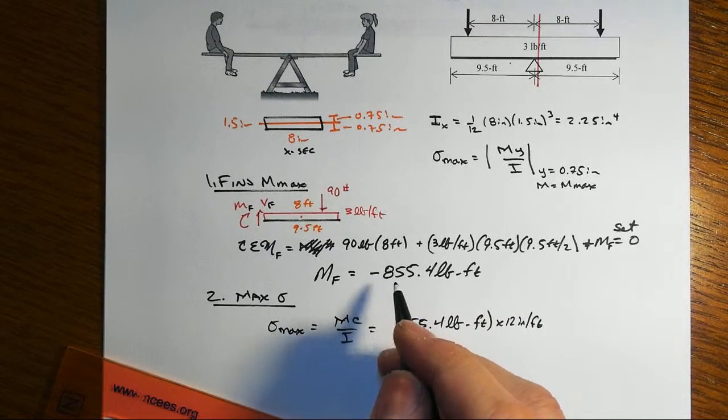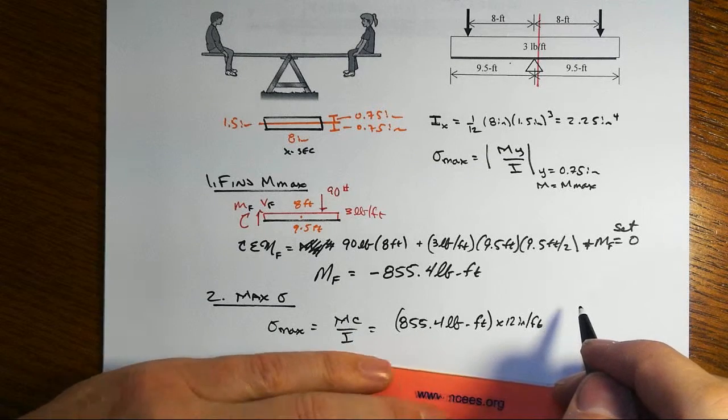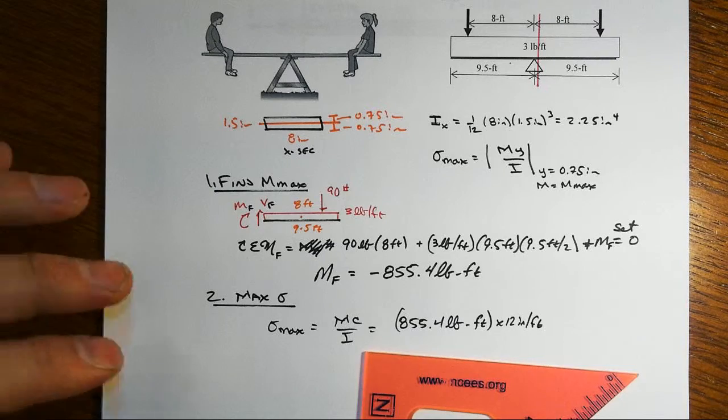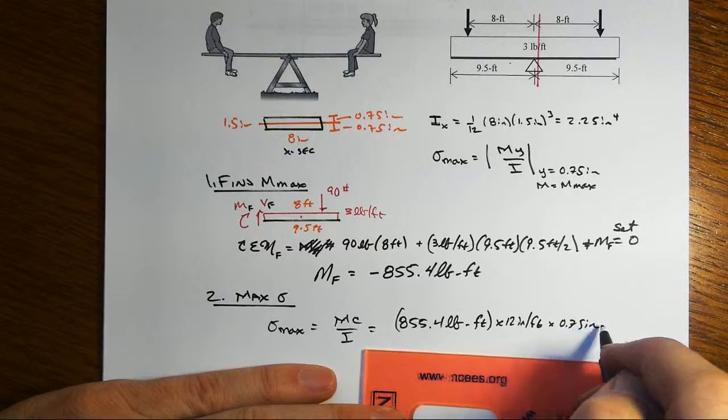Notice I dropped the minus sign because whether we go top or bottom, it's not going to matter in this instance. We're going to get the same kind of answer. And so we go to the top, that would be 0.75 inches.